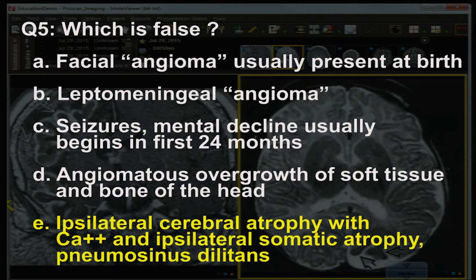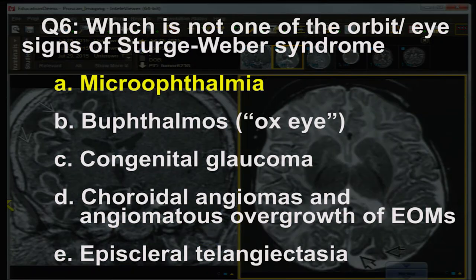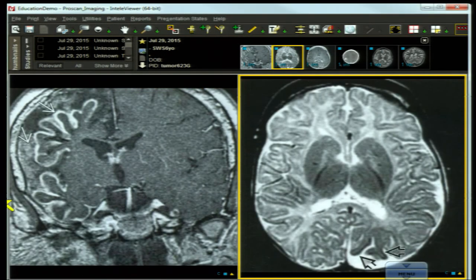Question five: the answer is E. Ipsilateral cerebral atrophy with calcification is indeed part of Sturge-Weber syndrome, but ipsilateral somatic atrophy of the body is NOT. Pneumosinus dilatans is also not associated with Sturge-Weber — it is associated with Dyke-Davidoff-Masson syndrome. Question six: the answer is micro-ophthalmia. The other orbital signs — buphthalmos (ox eye), congenital glaucoma, choroidal angiomas, angiomatous overgrowth of extraocular muscles, and episcleral telangiectasia — ARE part of the syndrome complex.